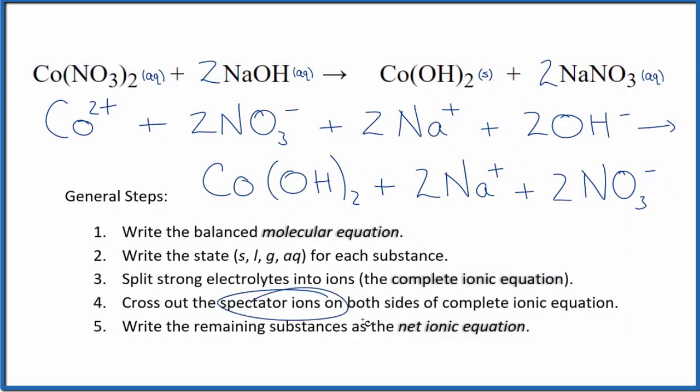Now we can cross out the spectator ions. They're on both sides. So if I look at the top here, the reactants, I have two nitrate ions. Products down here, two nitrate ions. These are spectator ions. We can get rid of those.